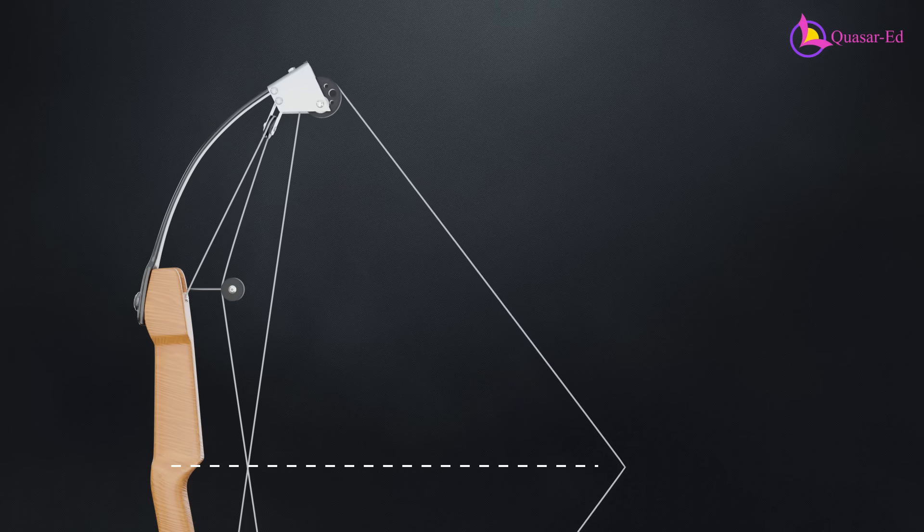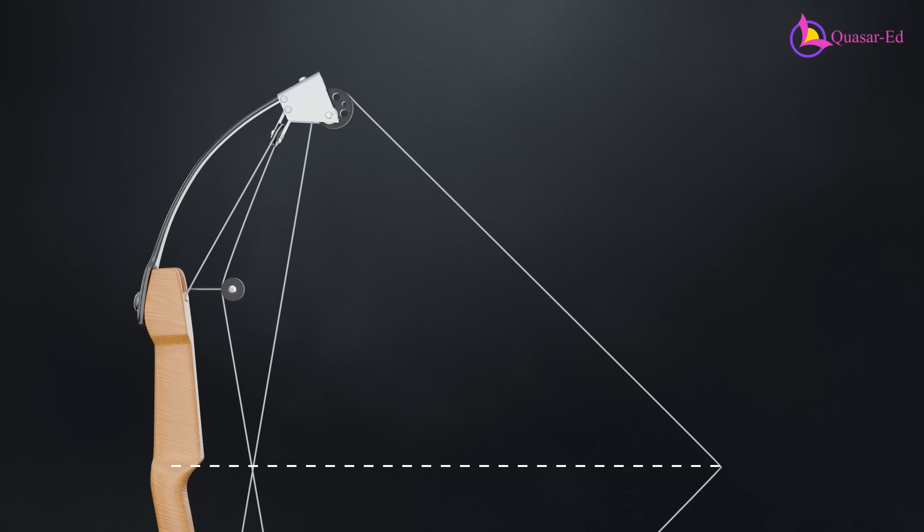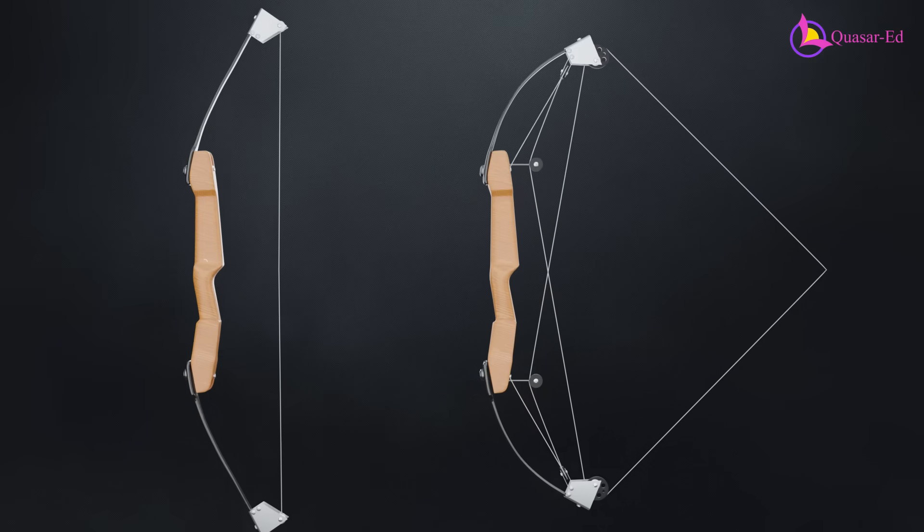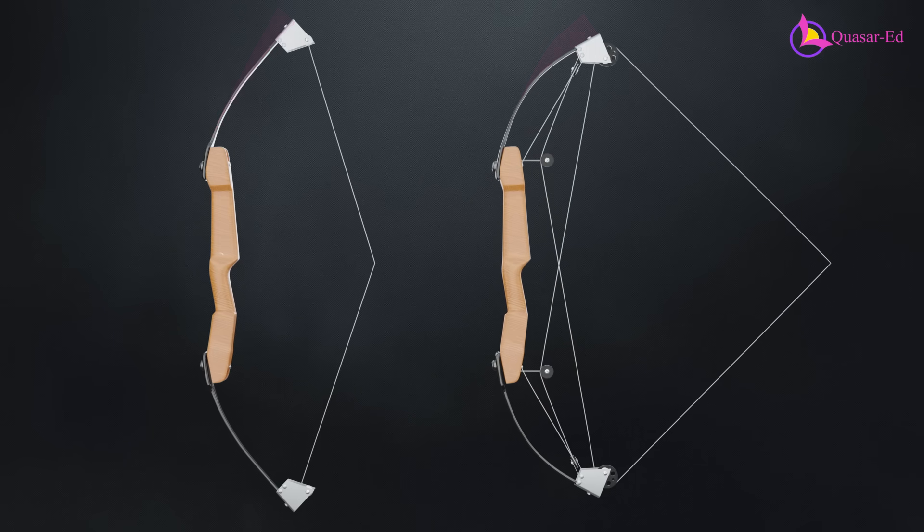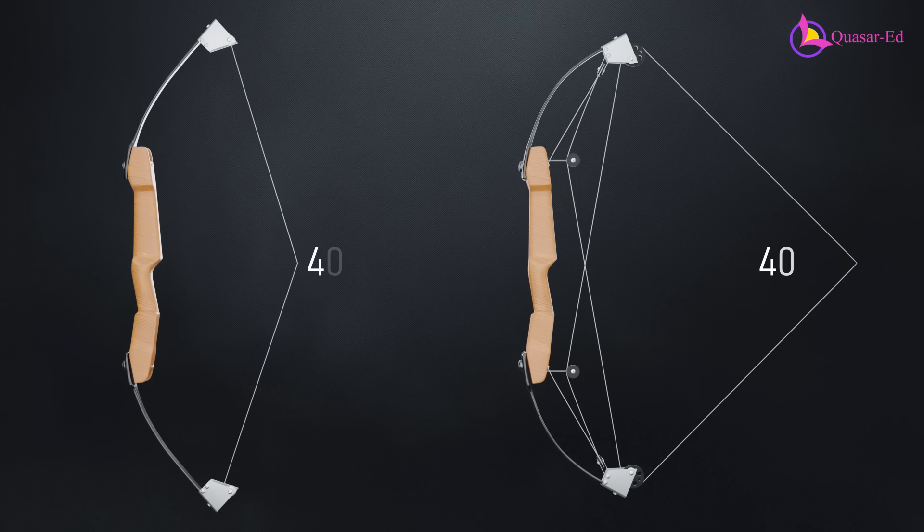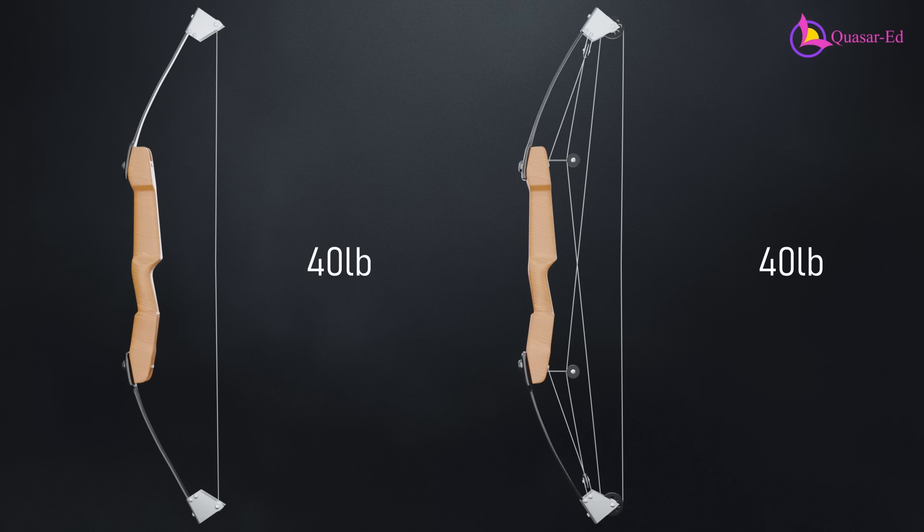With a pulley system, a full draw can be achieved because the force is distributed over a longer distance. Without it, an archer could only pull one-fourth of the distance, meaning the limbs would bend by the same amount. As a result, the total power of the bow remains the same, regardless of whether or not the pulley system is used.